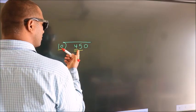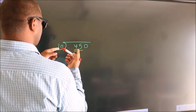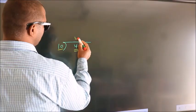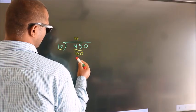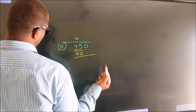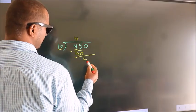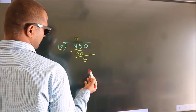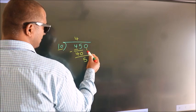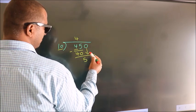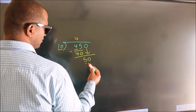A number close to 45 in the 10 times table is 10 fours, 40. Now we should subtract. We get 5. After this, bring down the beside number. So 0 comes down. So 50.